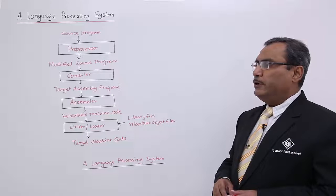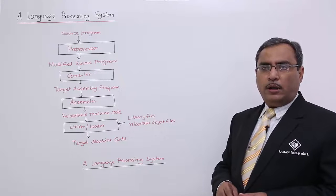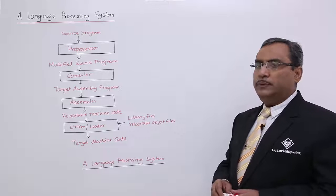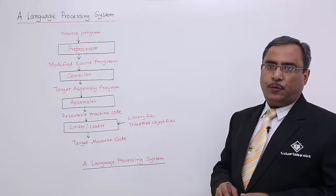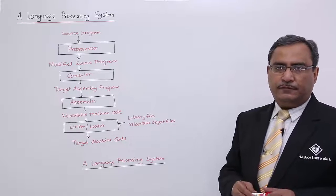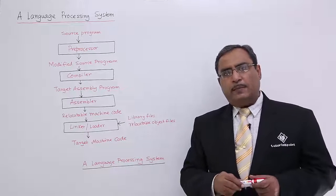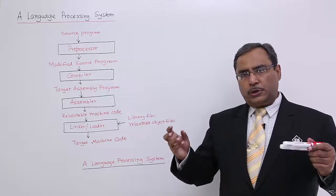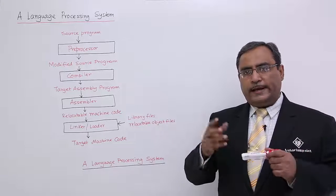We know that whenever we write a program, we usually write a program in some source language. And the program thus produced will be known as a source program. But a source program is not sufficient enough. It might be taking help from other programs, other modules written outside or residing outside.